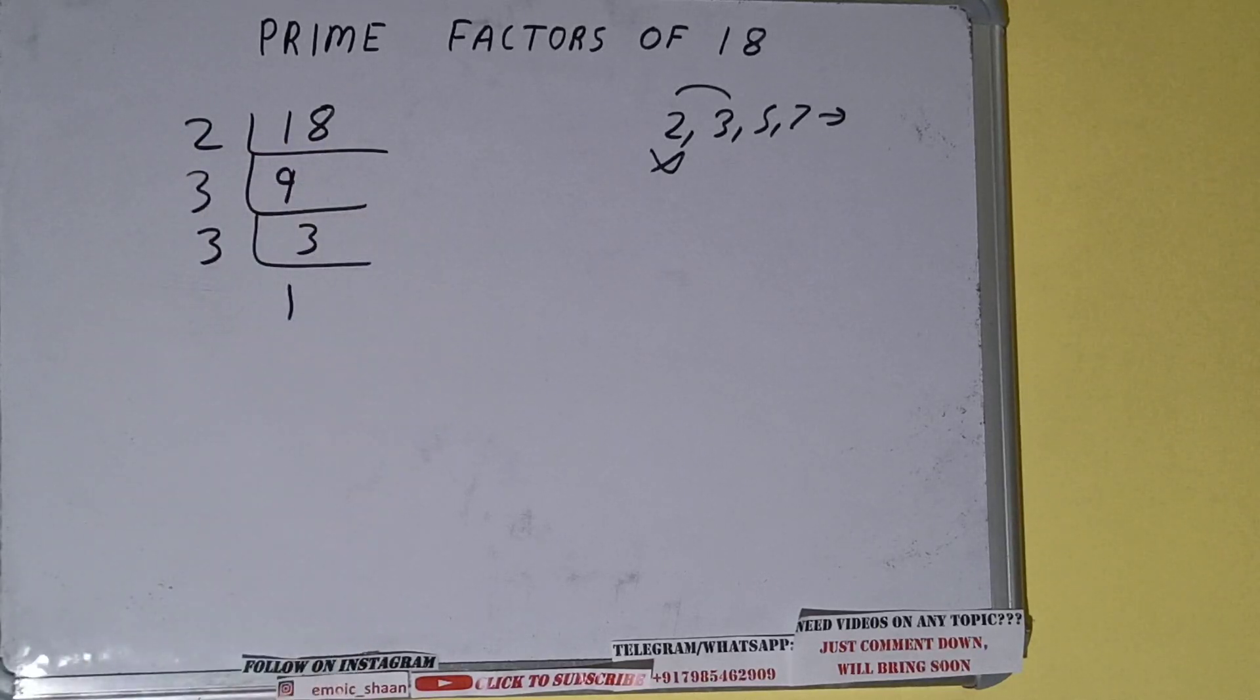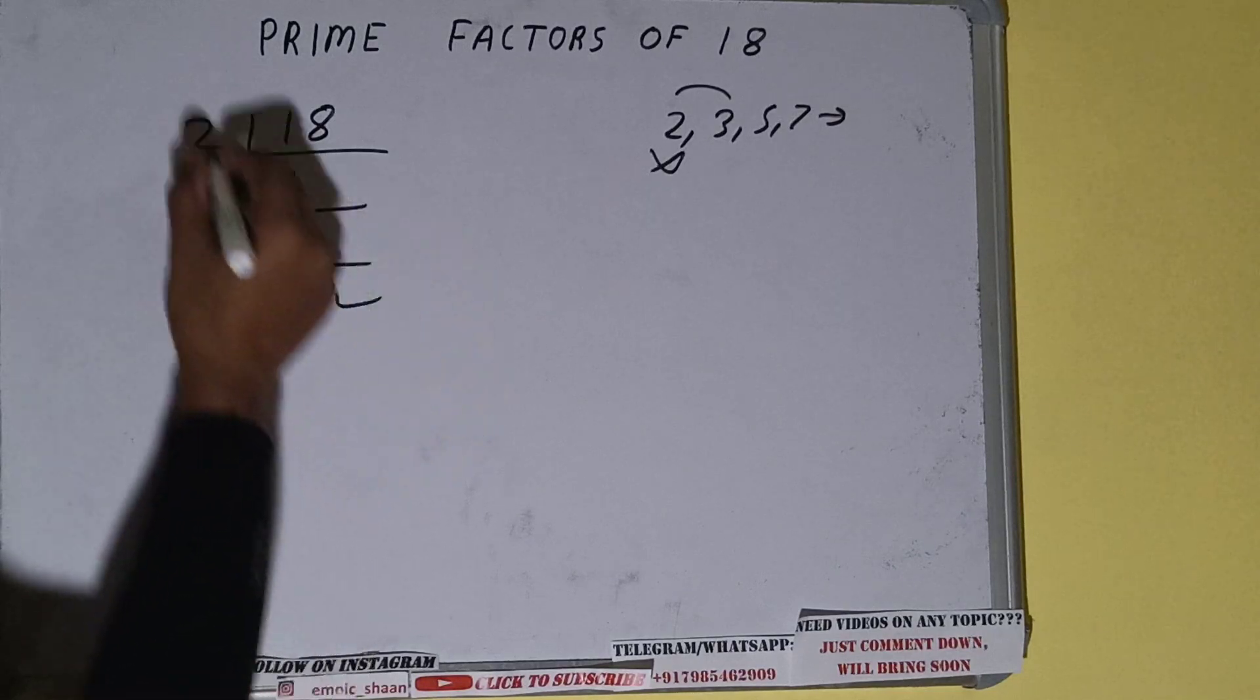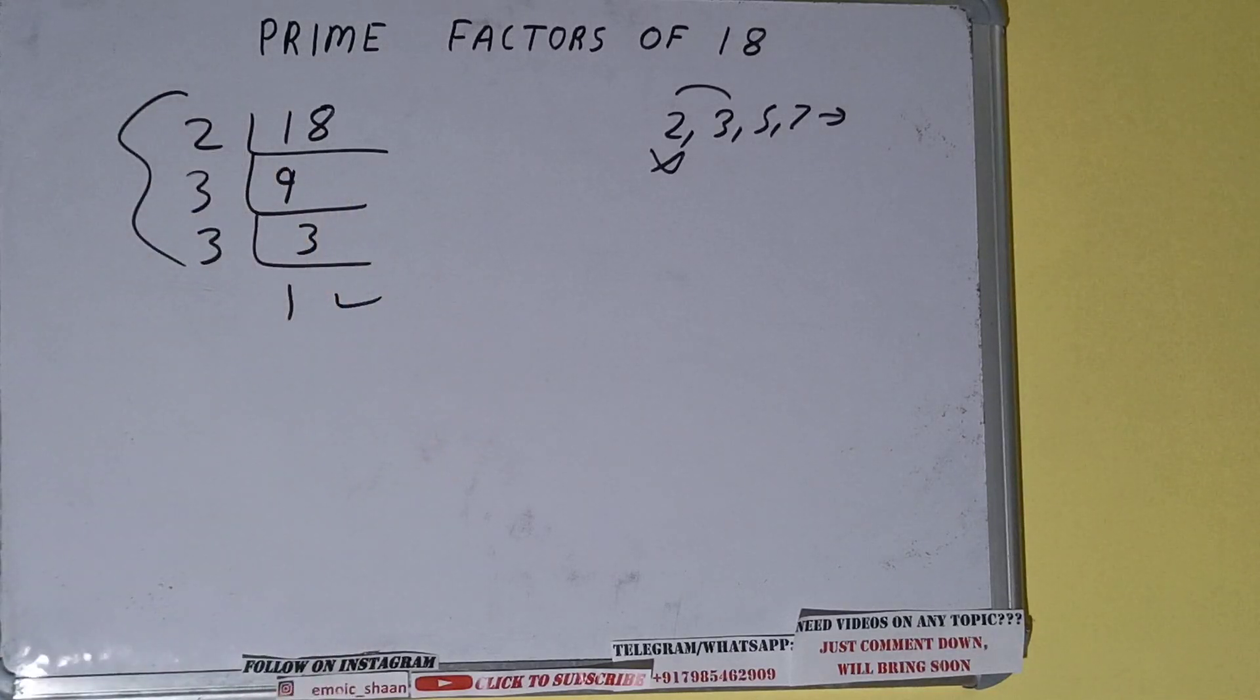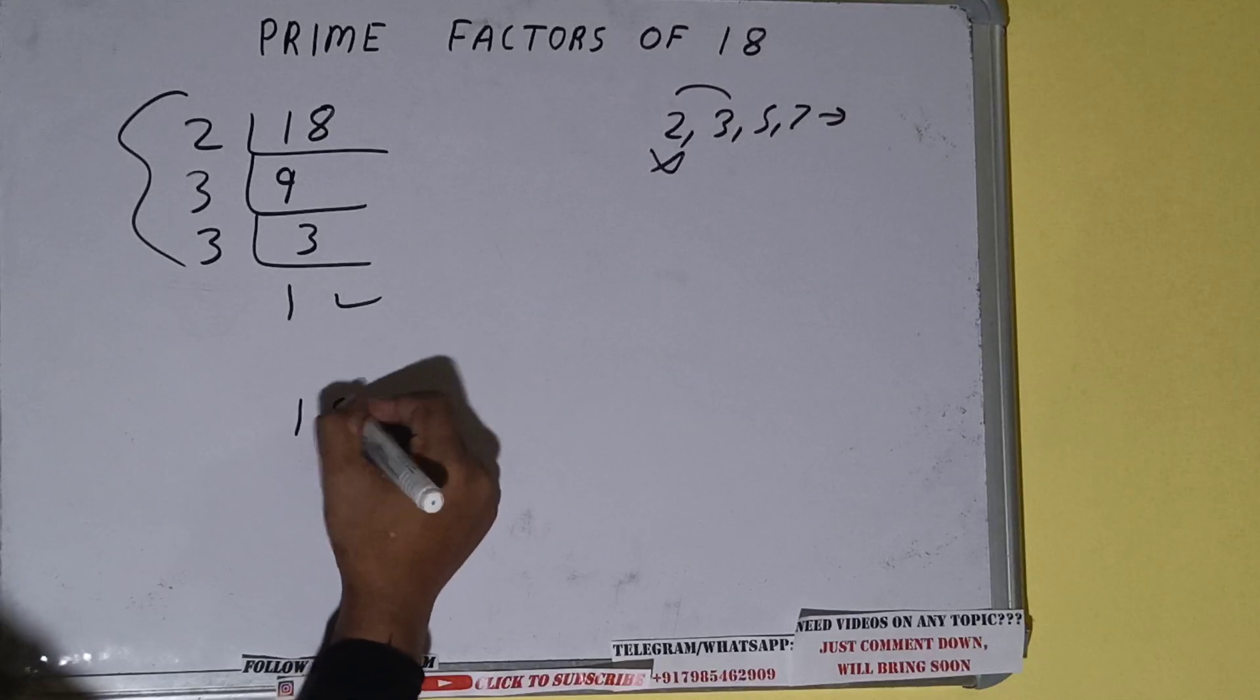Once we get one, we need to stop. And whatever is on the left-hand side will be the set of prime factors for the number 18. So prime factors of number 18 will be 2 × 3 × 3. That will be the answer.